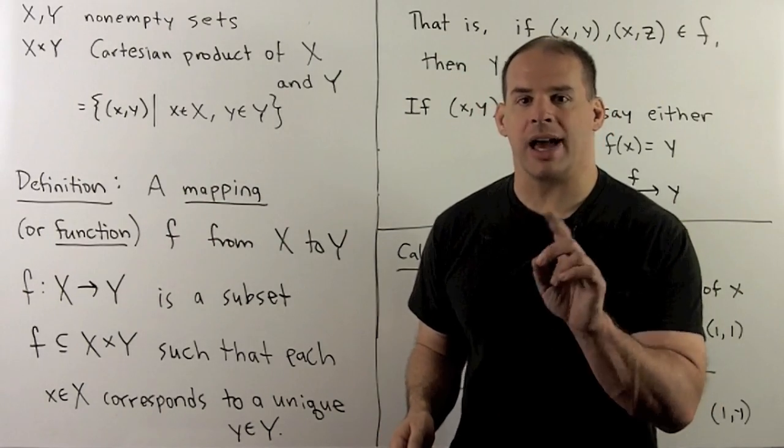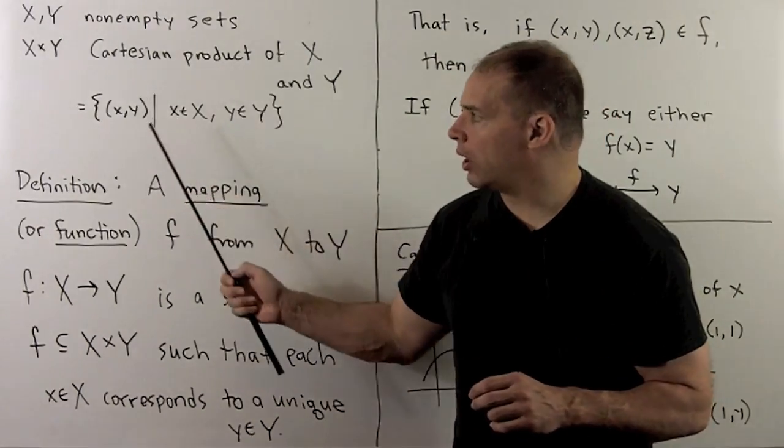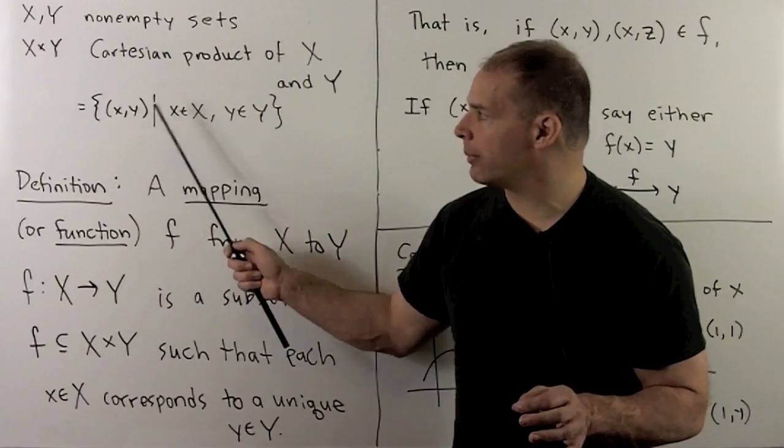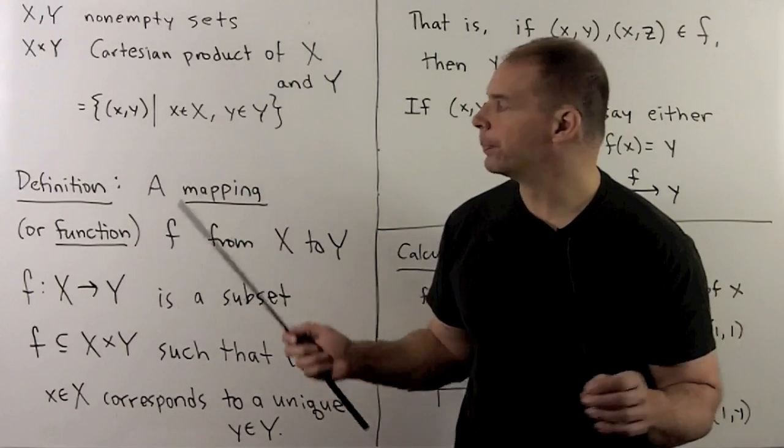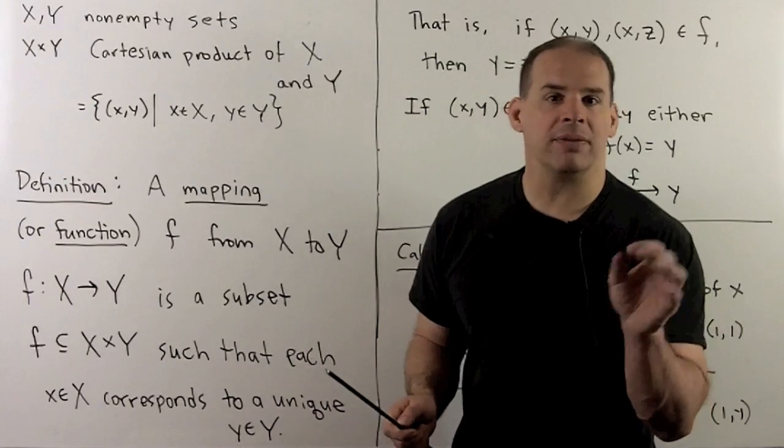We'll form the Cartesian product, x cross y. So, recall this is the set of all ordered pairs, x comma y, where x is in x, y is in y.